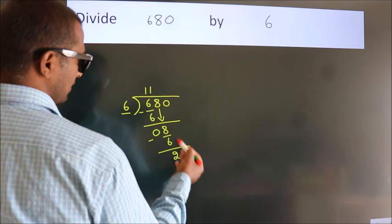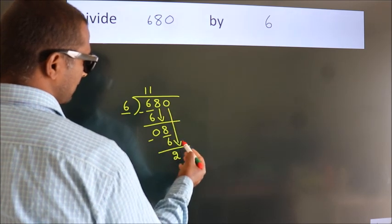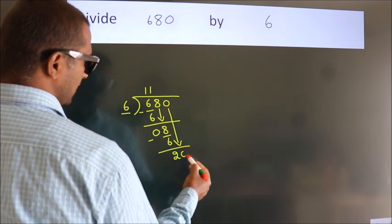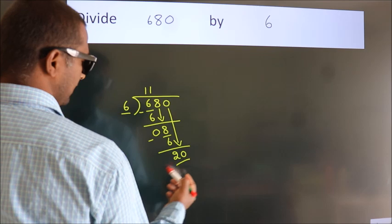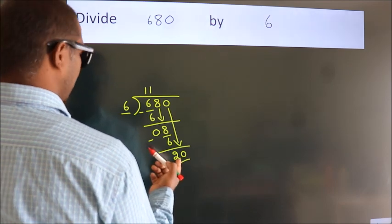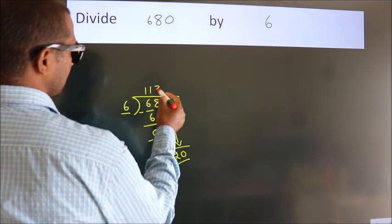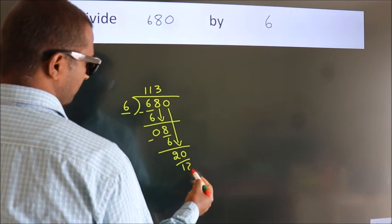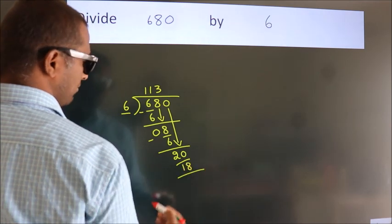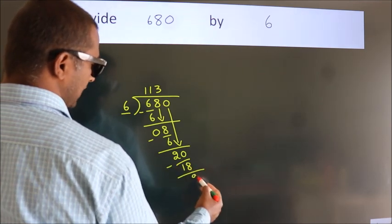After this, bring down the beside number. So, 0 down. So, 20. A number close to 20 in 6 table is 6, 3 is 18. Now, we subtract. We get 2.